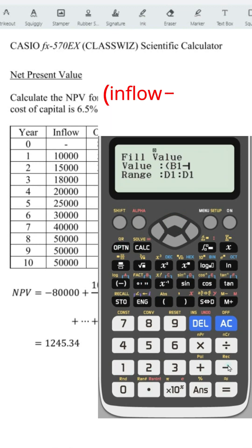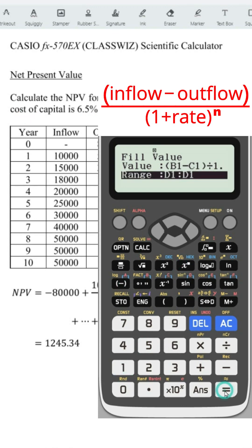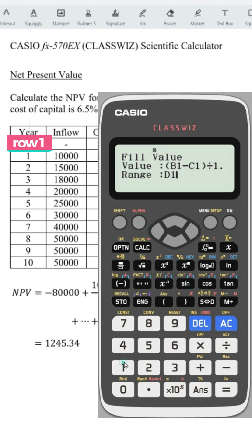B1 minus C1, close bracket, divided by 1.065 to the power of A1, equals, for the range D1 colon to D11.